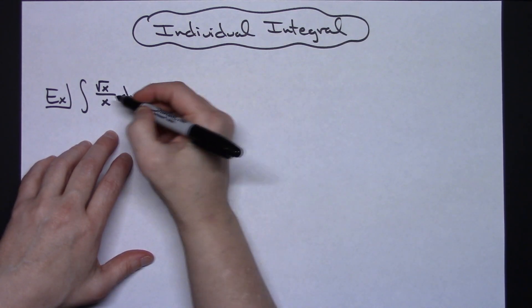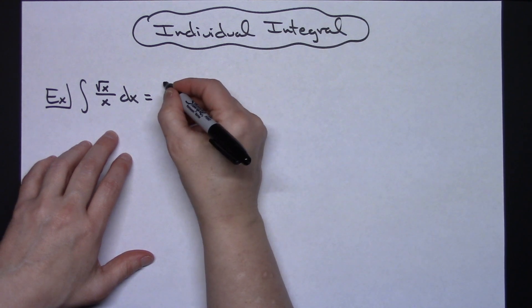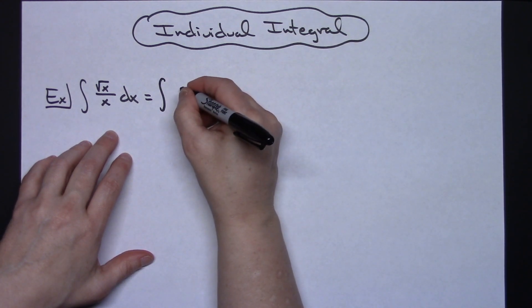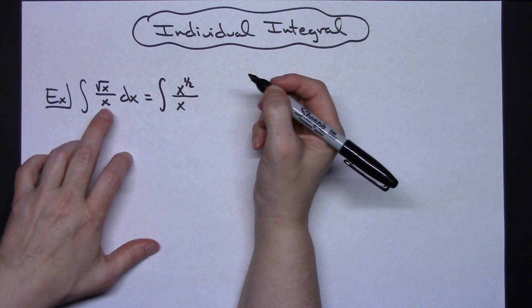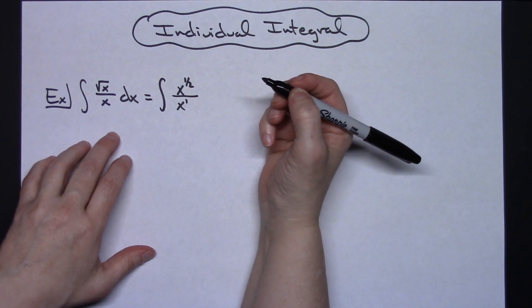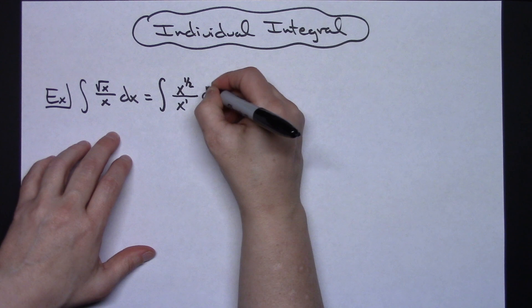First thing I would probably do is I would take that square root of x and write it so that you can see it as an exponent. So x to the 1/2 over an x, and then there is an imaginary one exponent right there that you might want to put in dx.